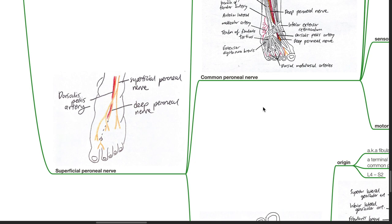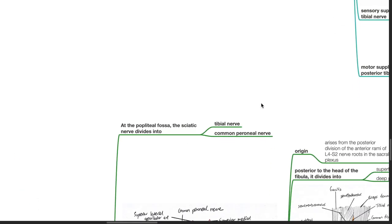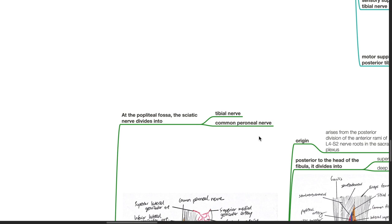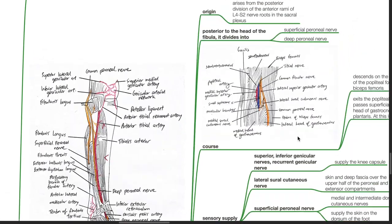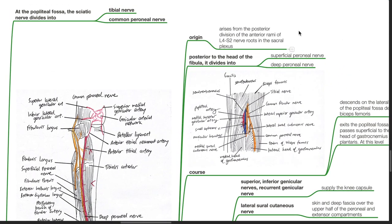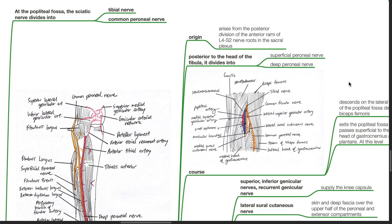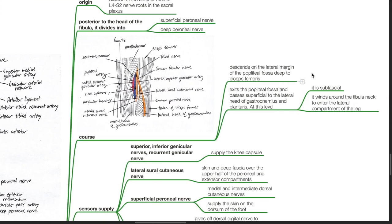Superficial peroneal nerve. At the popliteal fossa, the sciatic nerve divides into the tibial nerve and common peroneal nerve. Common peroneal nerve origin: It arises from the posterior division of the anterior rami of the L4 to S2 nerve roots in the sacral plexus. Posterior to the head of the fibula, it divides into the superficial peroneal nerve and deep peroneal nerve. Course: It descends on the lateral margin of the popliteal fossa deep to the biceps femoris, exits the popliteal fossa, and passes superficial to the lateral head of the gastrocnemius and plantaris. At this level it is sub-fascial. It winds around the fibular neck to enter the lateral compartment of the leg.